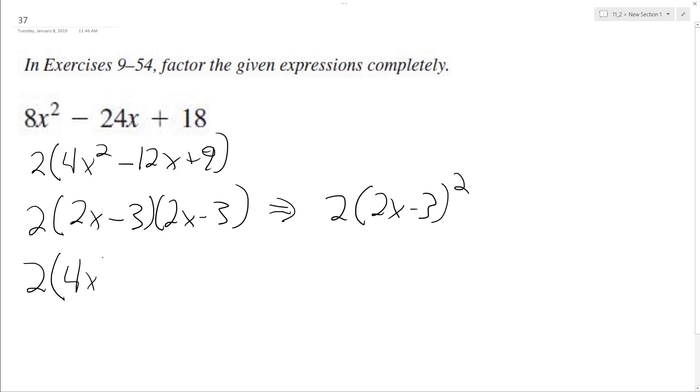So 2x times 2x is 4x squared. 2x times negative 3 is minus 6x. And then negative 3 times 2x, negative 6x plus 9.